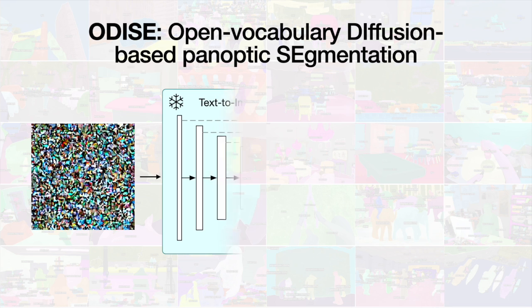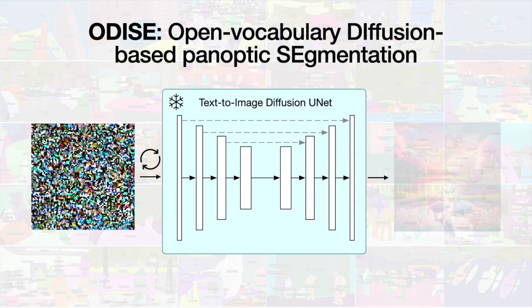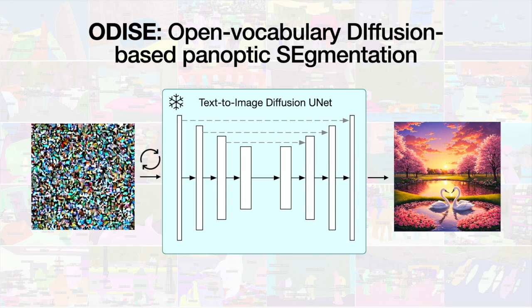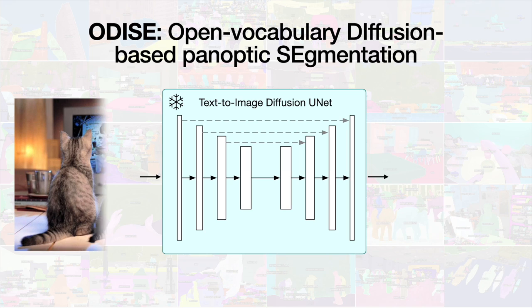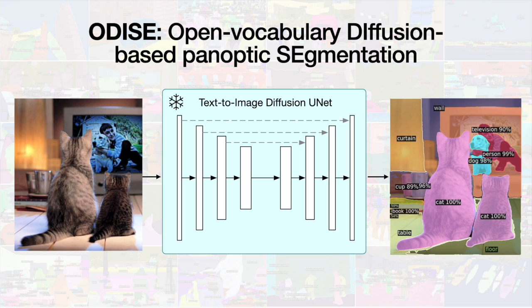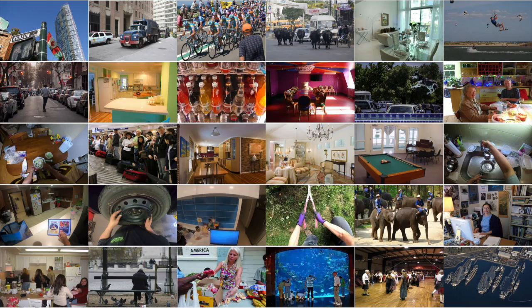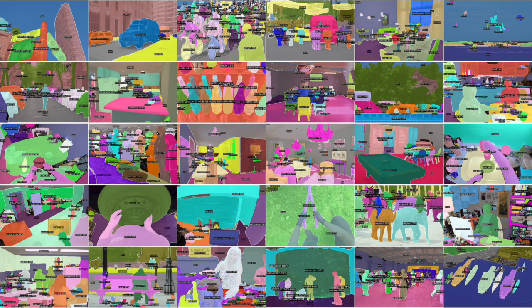Going beyond generative tasks, Odyssey leverages the frozen internal representation of larger-scale text-image diffusion models for Open Vocabulary Panoptic Segmentation tasks. It segments and recognizes any category beyond the limited training ones. Here are some qualitative example results from Odyssey. It can perform panoptic segmentation of the input image and recognize an unlimited number of categories in the real world. The model is quite robust to the input image's domain change and category distribution shift.